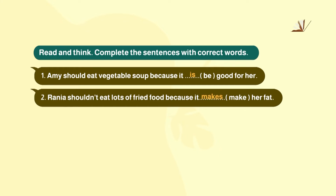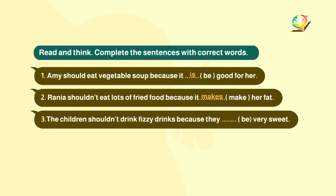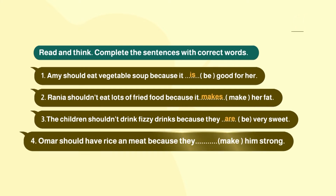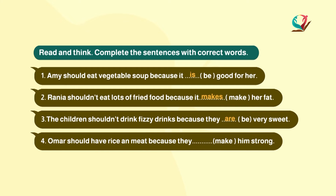Number three: The children shouldn't drink fizzy drinks because they ___ very sweet. The correct verb for 'they' is 'are'. Number four: Omar should have rice and meat because they ___ him strong. The subject 'they' is plural, so the verb 'make' stays the same without any addition.